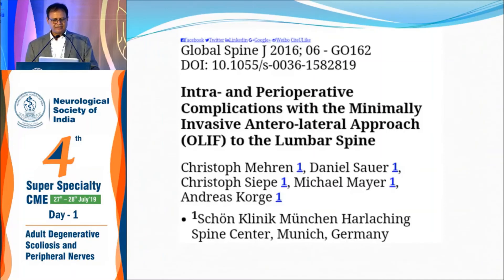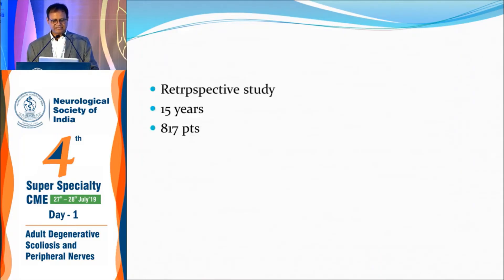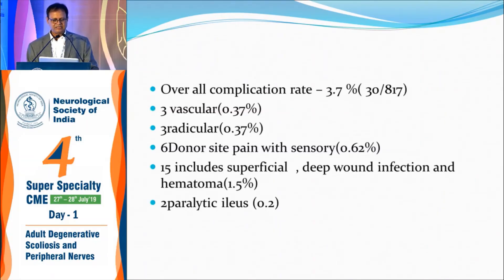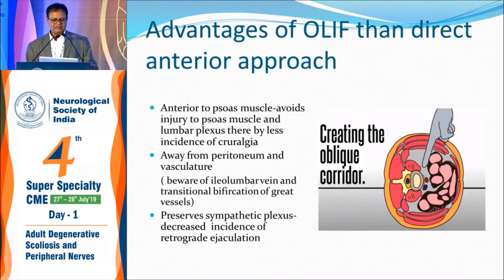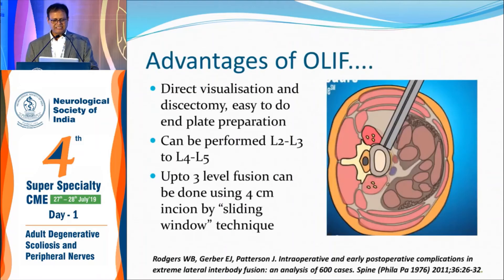What are the complications of OLIF? A 15-year retrospective study of 800 patients showed the overall complication rate is 3.7% — quite low compared to anterior lumbar interbody fusion via transperitoneal approach. The vascular complication rate is only 0.37%, compared to 2% in ALIF. The radicular symptom complication is 0.37%, compared to almost 12% in XLIF. So if you have to choose between ALIF, OLIF, and XLIF, probably OLIF is better — though it is limited to L2-3, L3-4, and L4-5.